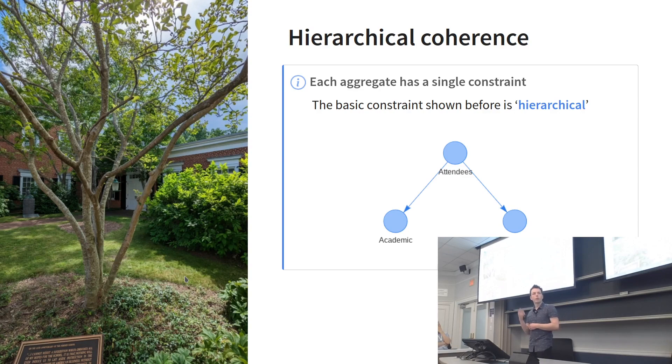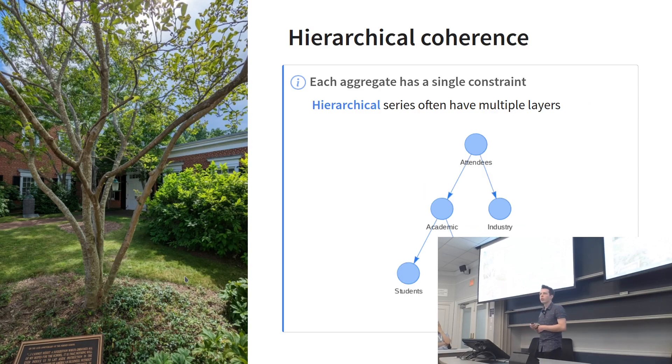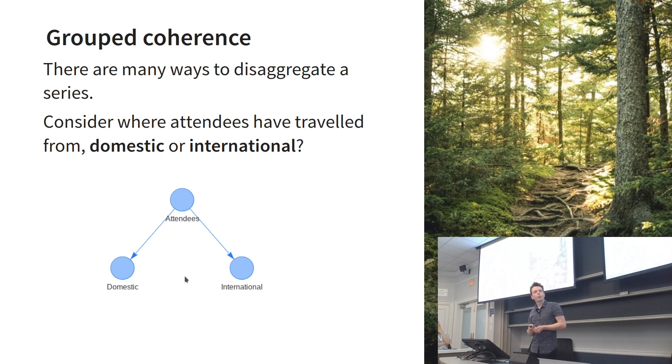So let's think about graphs now. The hierarchy we saw before is a hierarchy, but often they have multiple layers and aren't necessarily balanced. Here I've split academic further into students and staff. In graph terms, this is known as a polytree.